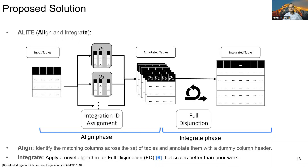Here is our full solution for the table integration problem. We call our solution ALITE, which indicates its two phases of integrating the tables. First, Align, and second, Integrate. In the Align phase, we identify which columns should be integrated together in the integrated table. We use a clustering approach to determine the set of aligning columns, and then for each set of aligning columns, we assign an integration ID. Next, in the Integrate phase, we use the integration IDs assigned in the first phase as input, and then we integrate them using our novel full disjunction algorithm to output an integrated table.